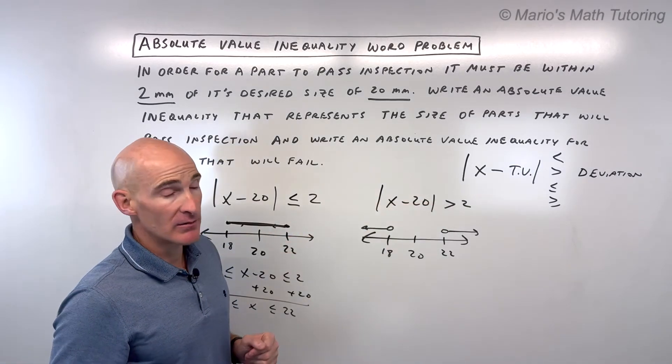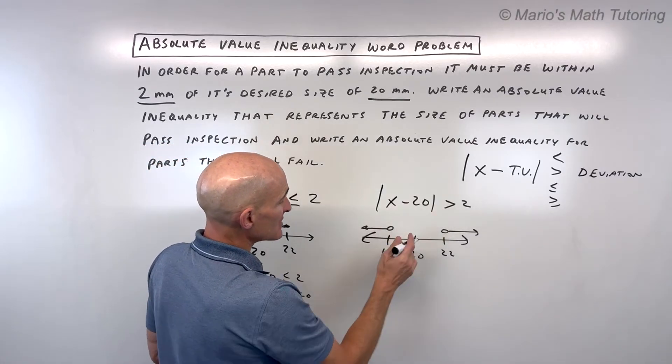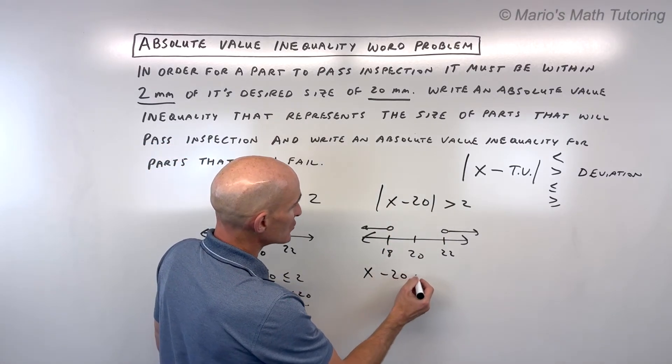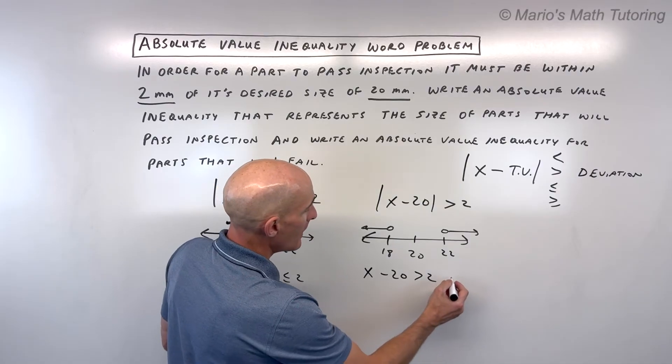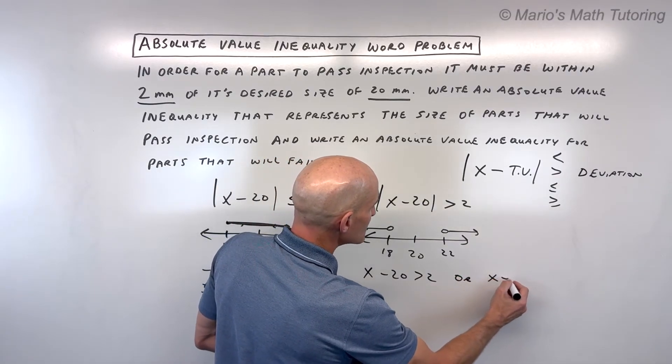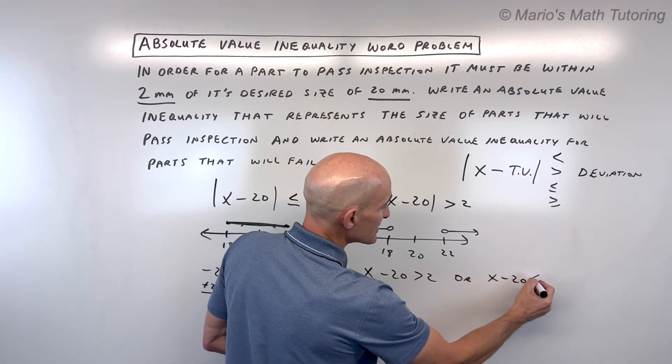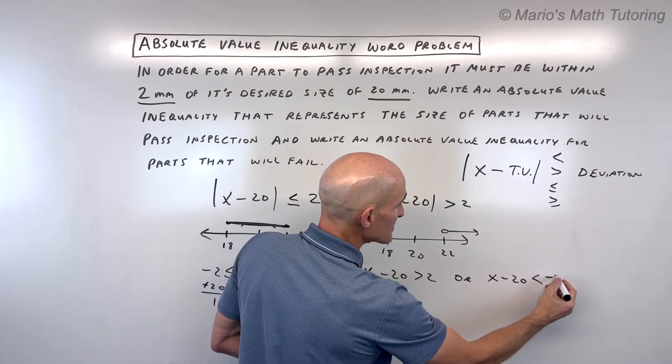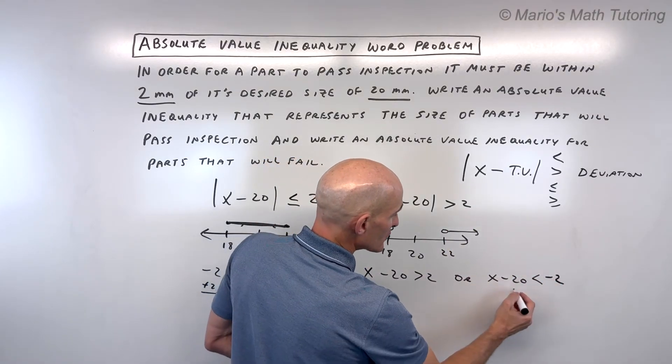If you're given a greater than absolute value, you can split this into two inequalities: x - 20 > 2, or x - 20 is—now watch this—we're going to flip this inequality sign and change this to the opposite.